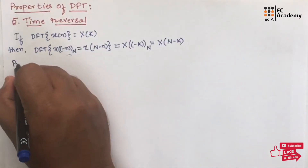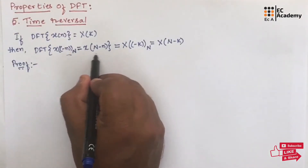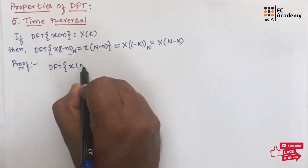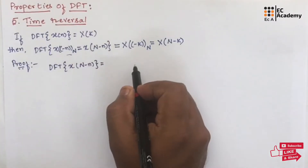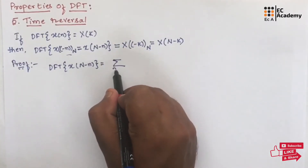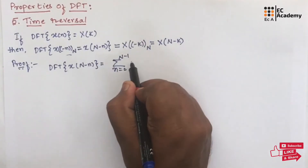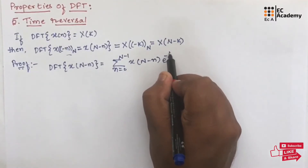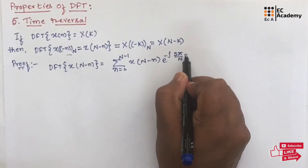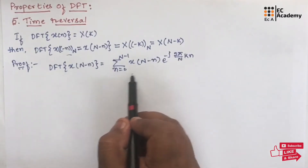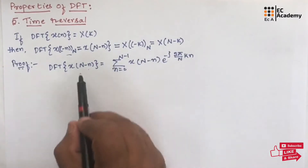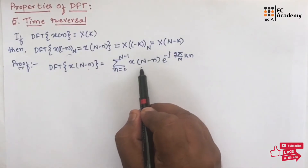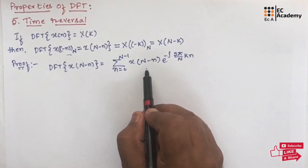Let us prove this. We will take the DFT of x of N minus n, which will be equal to the summation of n equals 0 to N minus 1 of x of N minus n, multiplied by e to the power of minus j 2 pi by N into k n. This is similar to the formula of DFT, except in place of x of n we have written x of N minus n.